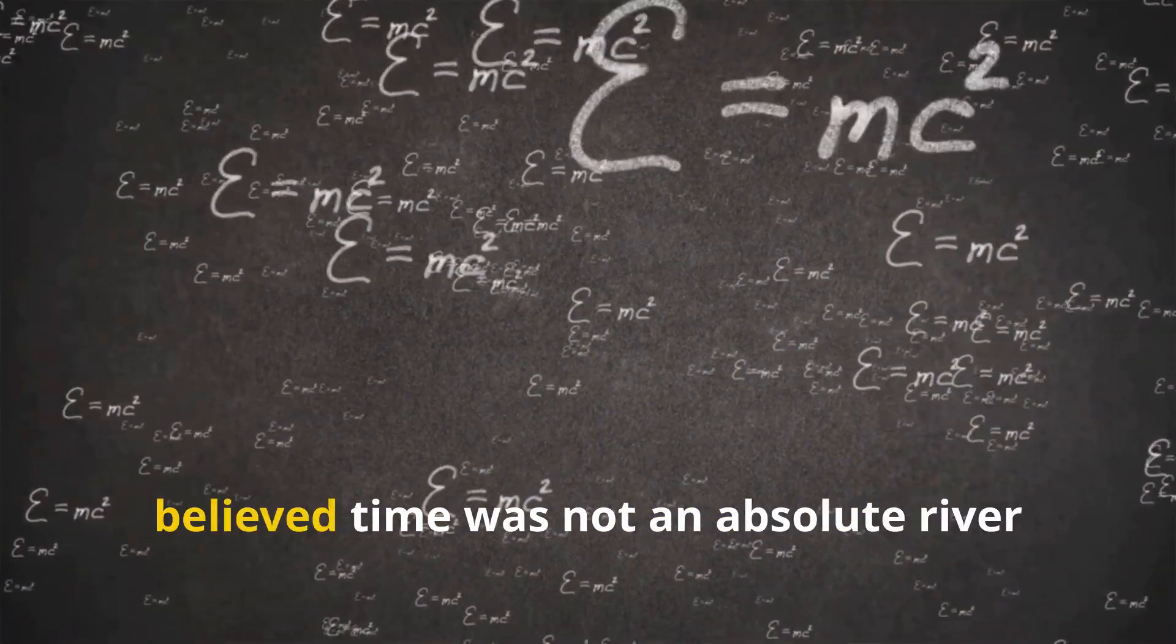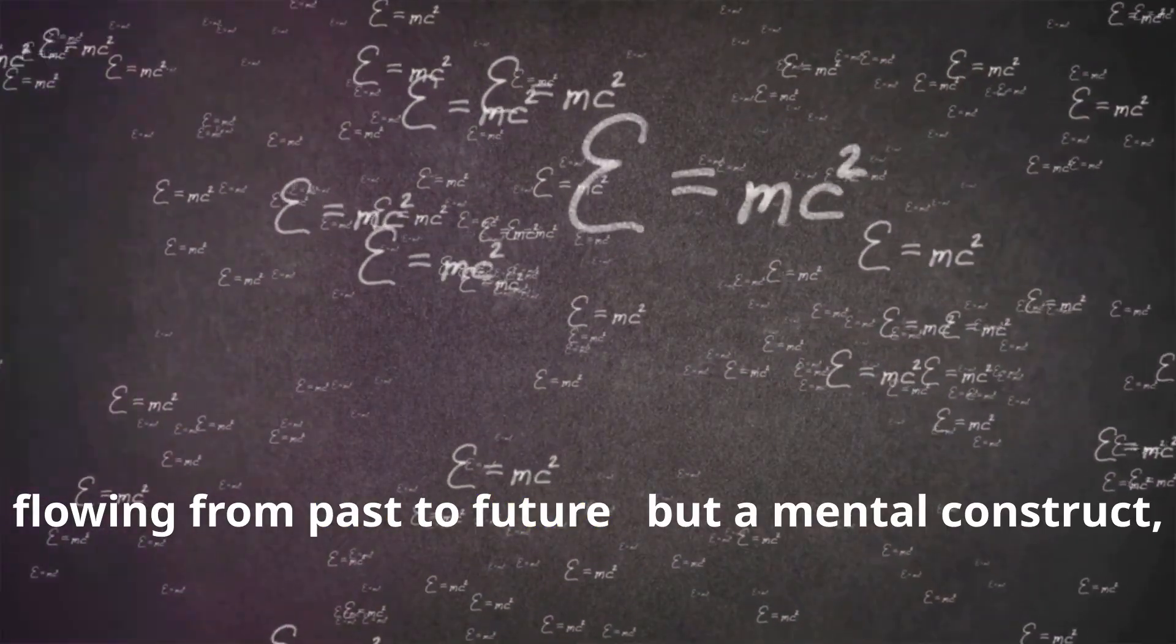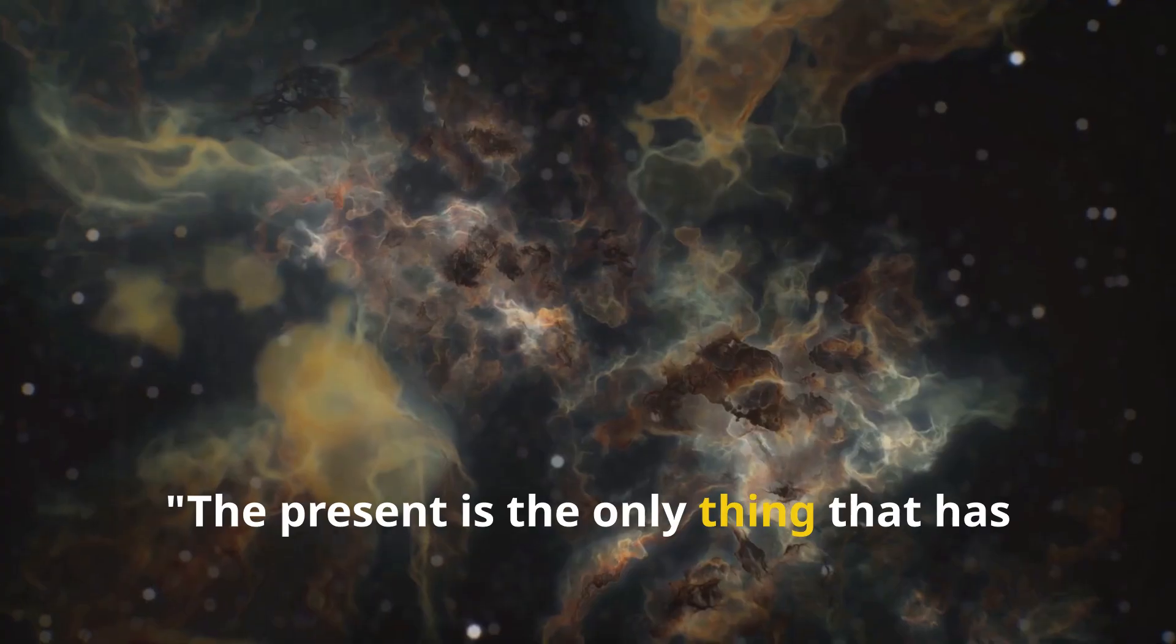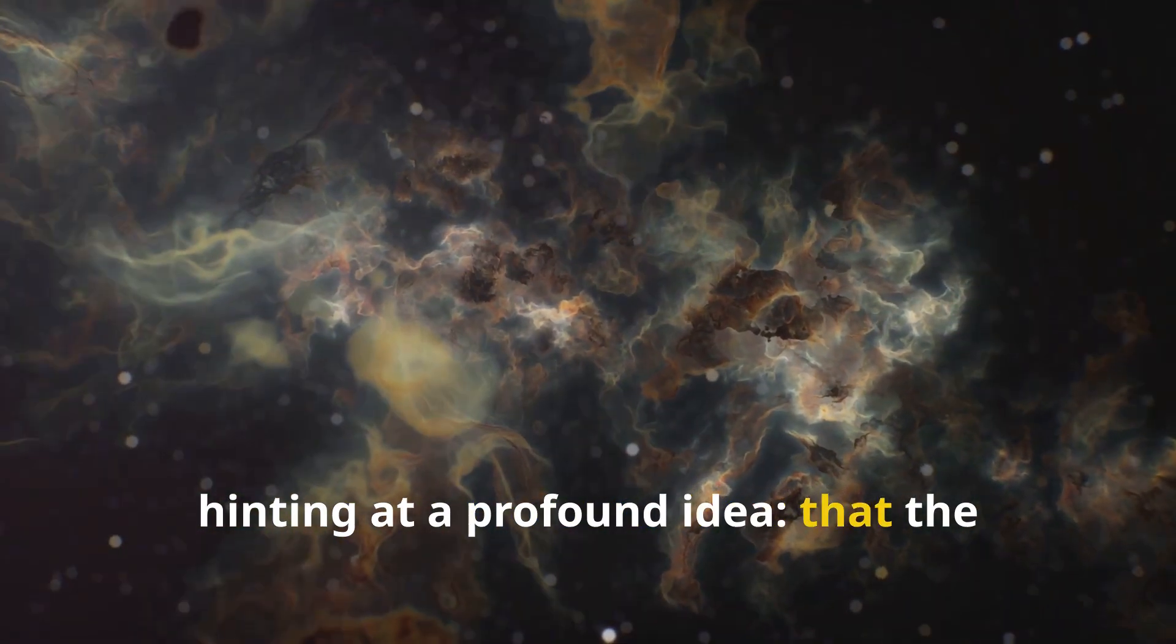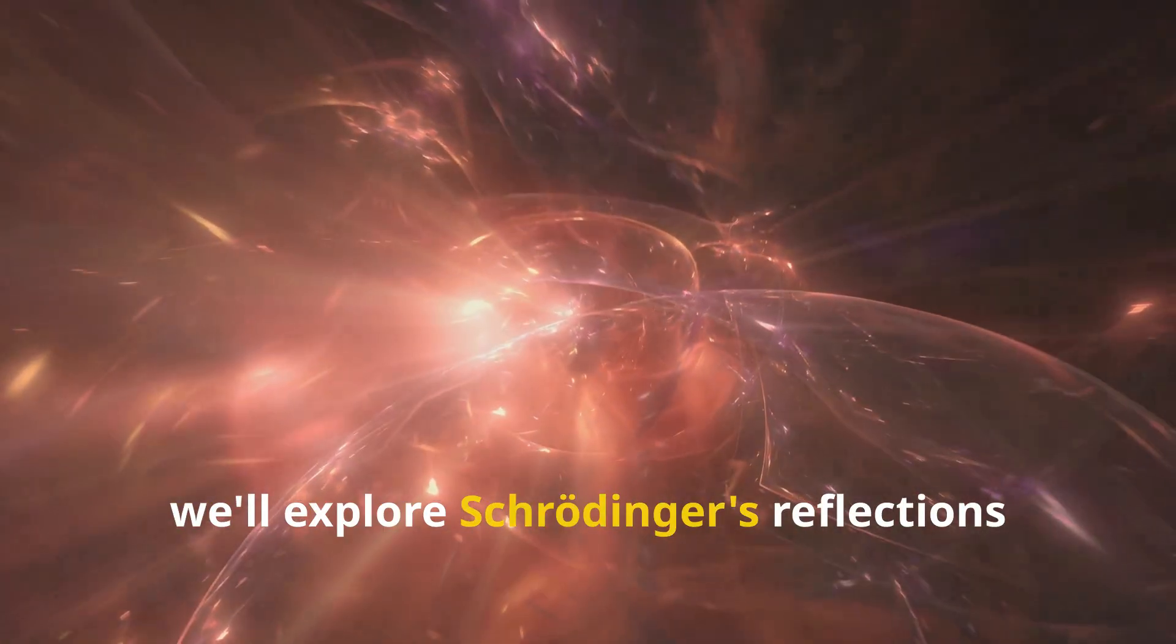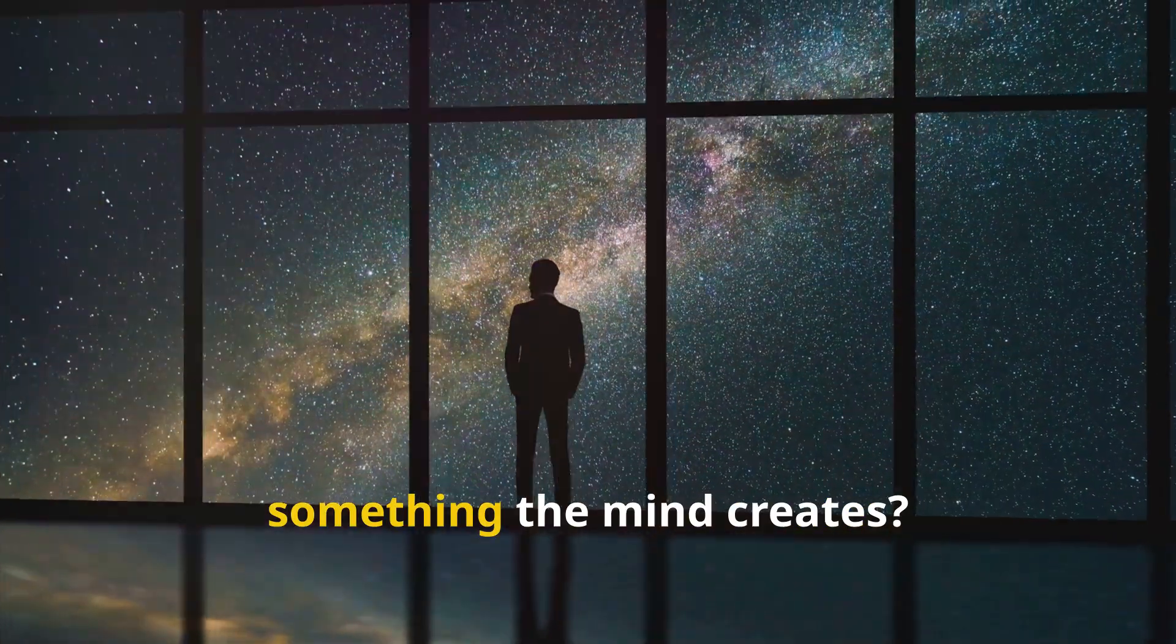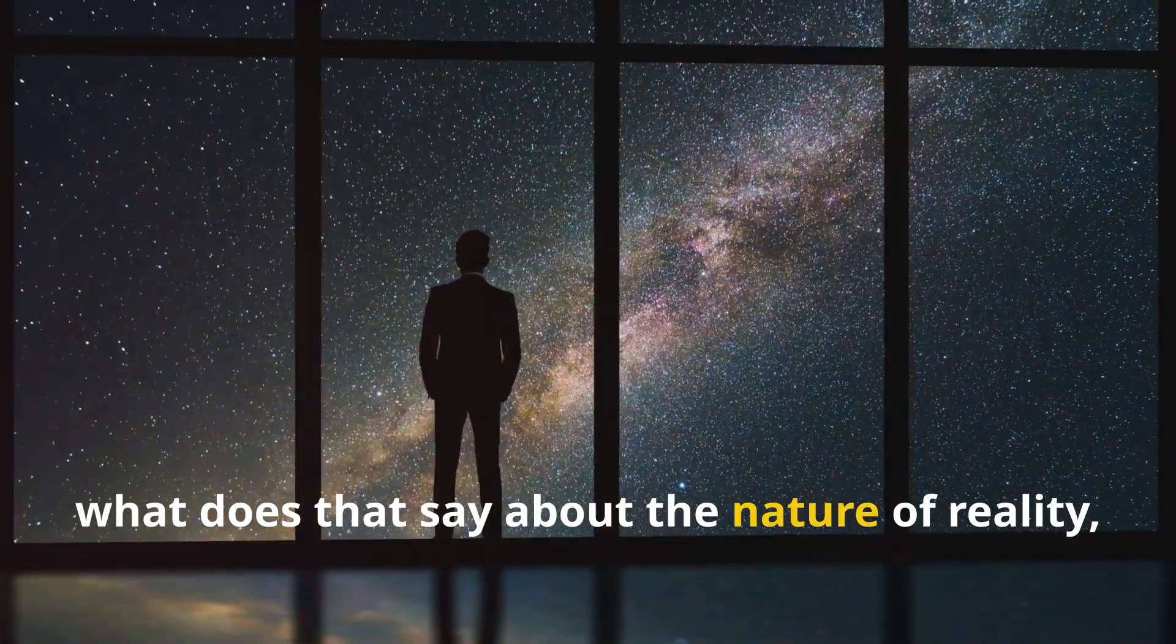The present is the only thing that has no end, he wrote, hinting at a profound idea that the eternal now is the true ground of being. In this video we'll explore Schrödinger's reflections on time, perception, and consciousness, and ask: is time just something the mind creates? And if so, what does that say about the nature of reality and the mystery of who we are?